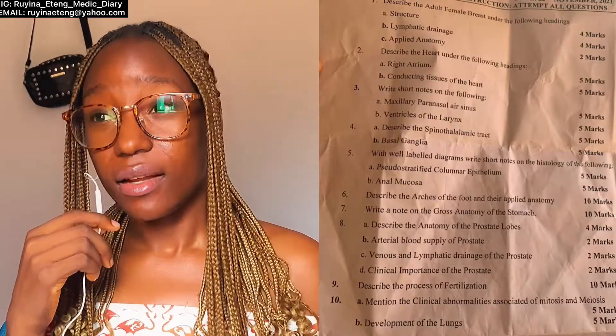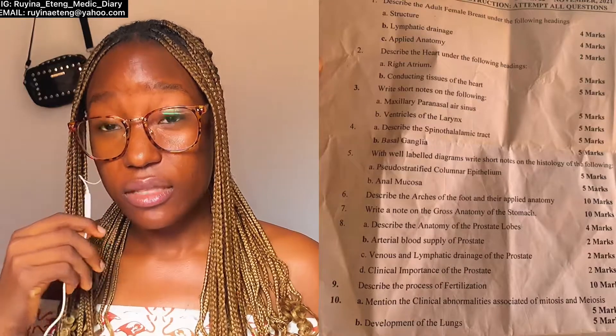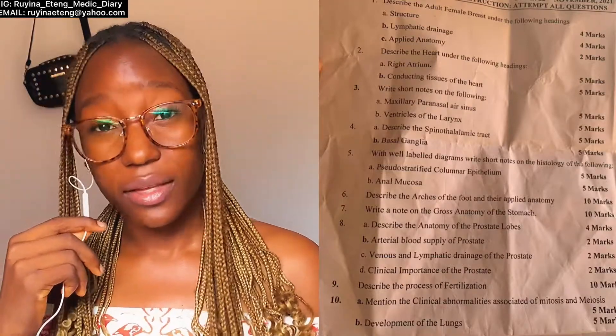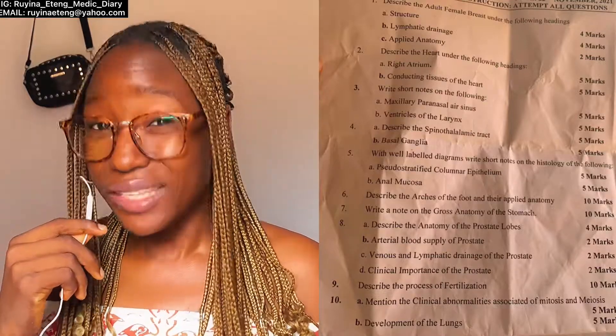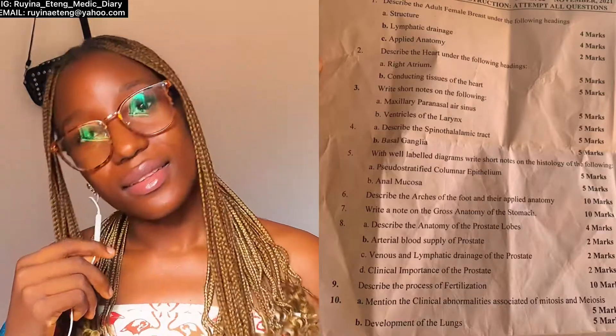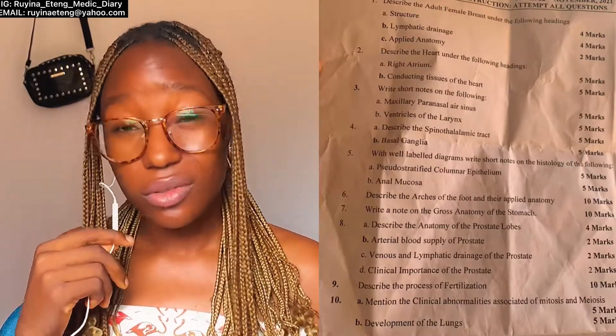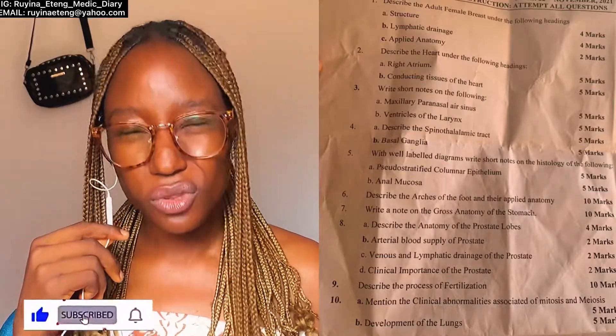Write about the structures that support each arch type — the ligaments, the bones. Also write about the summit and the floor: for example, in the medial longitudinal arch the talus is the summit, the keystone of that arch. Include the joints found in each arch, the characteristic features and main function of each. Crown it all with clinical anatomy — you cannot write about arches of the foot without mentioning flat foot and high-arched foot. Add any other clinical anatomies you know to beef up your answers. The last part of this video will be out by tomorrow, so come back then!